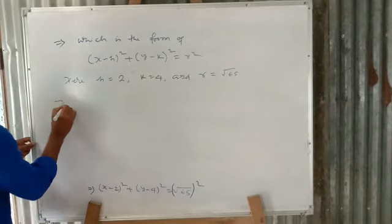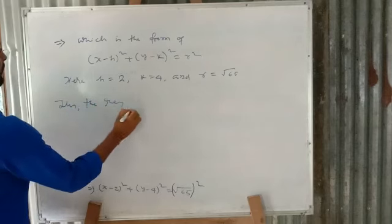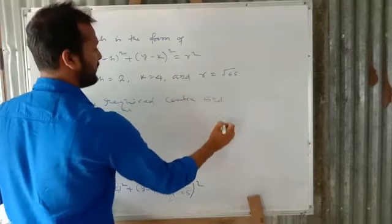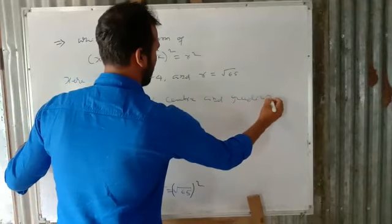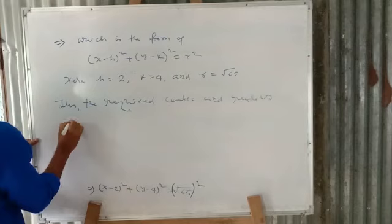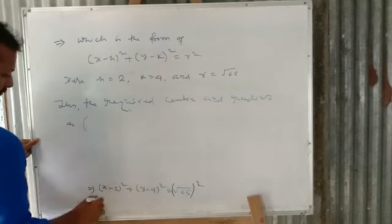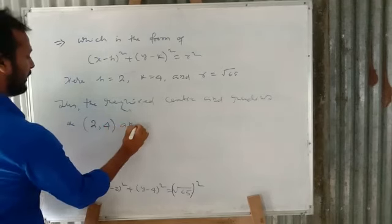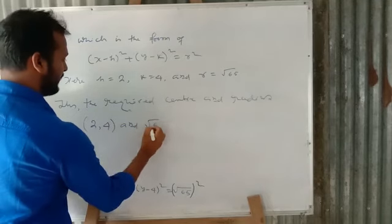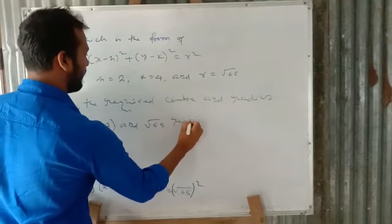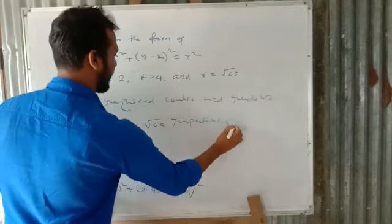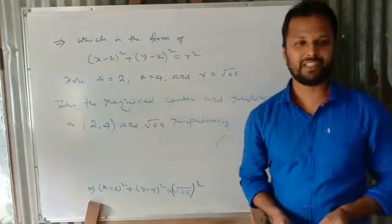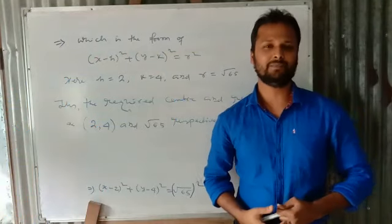Thus, the required center and radius are (2, 4) and √65 respectively. This is very simple. I hope you love this video — please subscribe and share. Thank you.